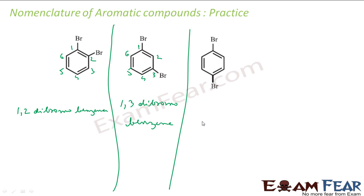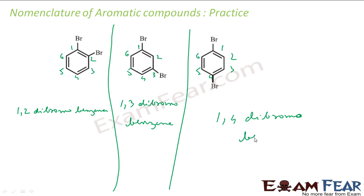Similarly, for the next example you can number the ring either way and you will get the same value for the two bromine positions. So the name is 1,4-dibromobenzene.